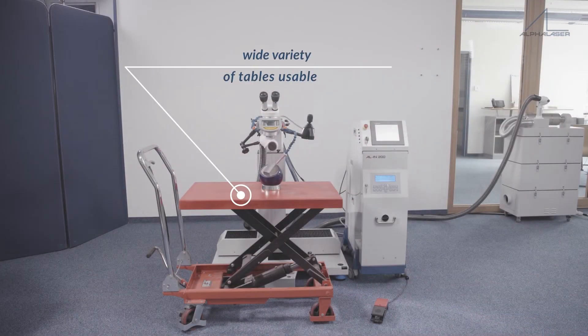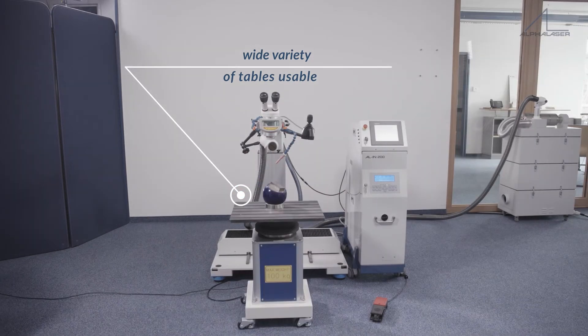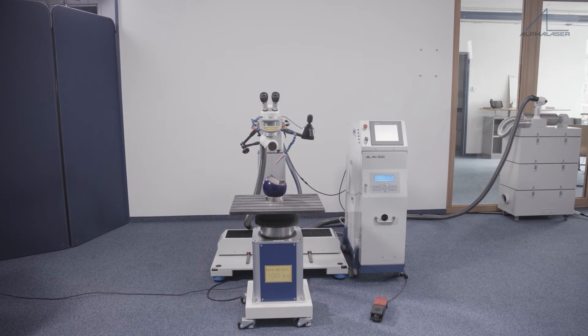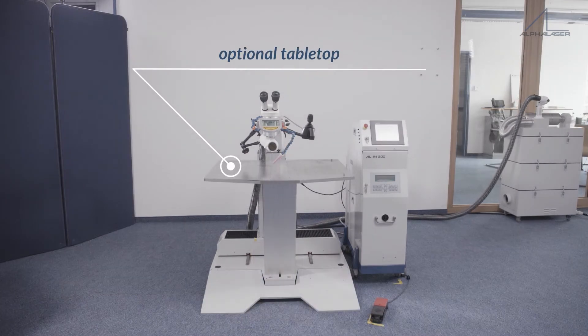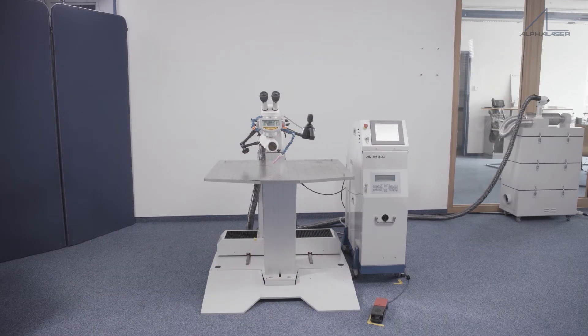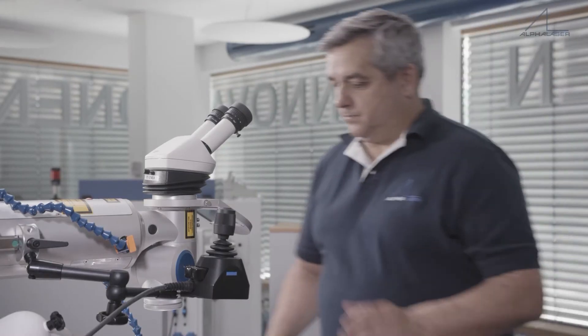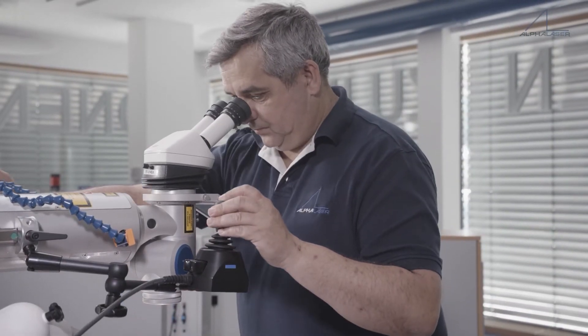In front of the laser Z-axis is enough space for a wide variety of tables or for large pieces on a pallet. You may place a scissor lift table, a table with Z adjustment, or you can work on the Alpha Laser tabletop which is also available.